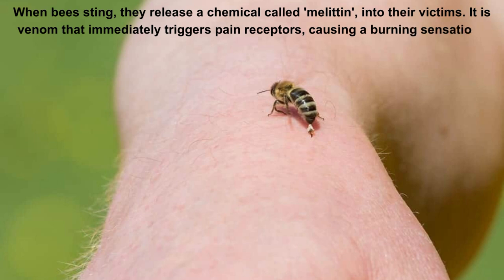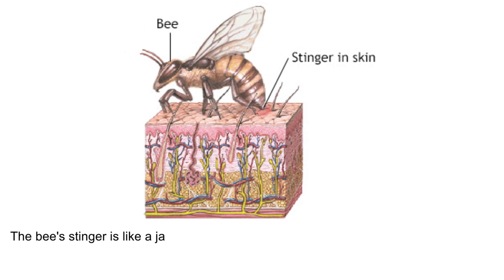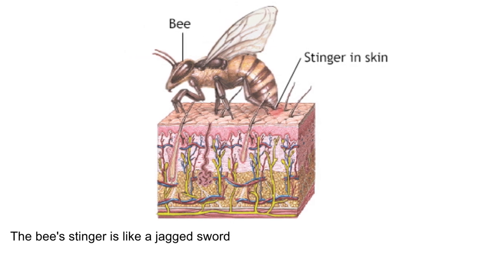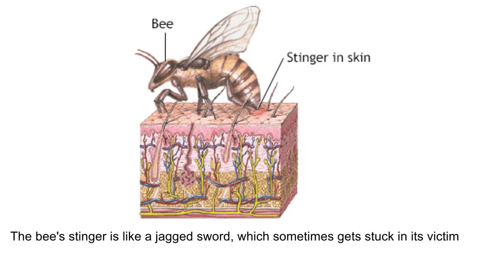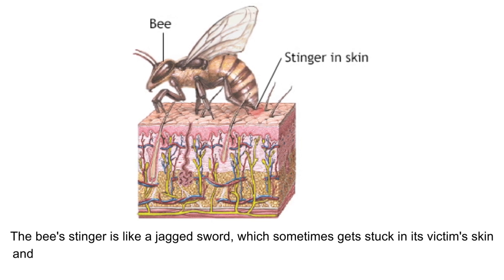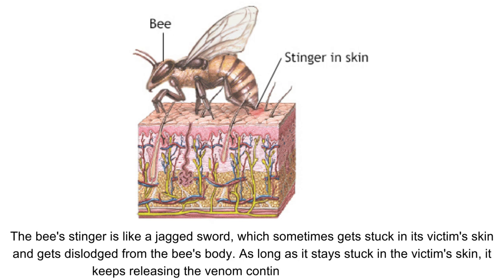The bee's stinger is like a jagged sword that sometimes gets stuck in the victim's skin and is dislodged from the bee's body. As long as it stays in the victim's skin, it keeps releasing the venom, continuing its toxic attack.